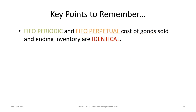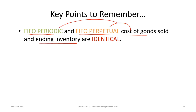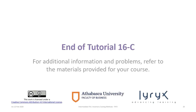The key point to remember from this tutorial is that under FIFO periodic and FIFO perpetual, the cost of goods sold and the ending inventory are identical. That concludes tutorial 16C on the first in first out approaches for inventory costing using both periodic and perpetual.